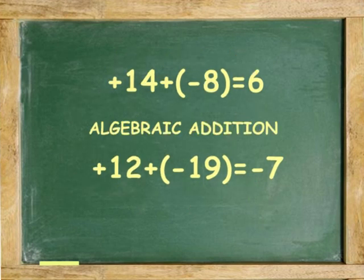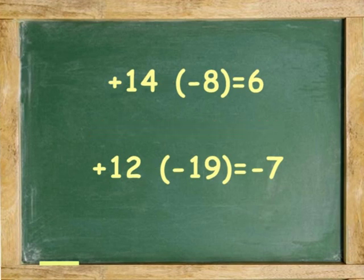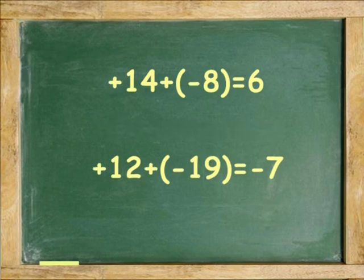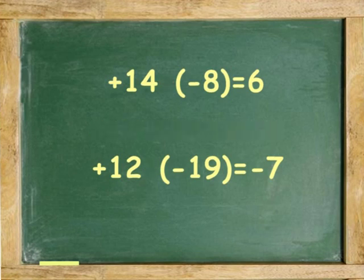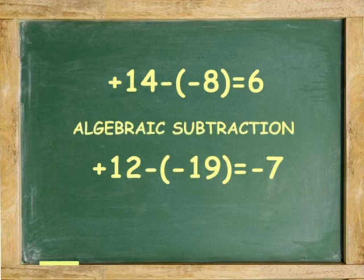What we just did is called algebraic addition. Notice that we are always adding, except that when you add a positive and a negative number, you are actually subtracting. Nevertheless, it is called algebraic addition. Now, if we have algebraic addition, we should also have algebraic subtraction. Algebraic subtraction involves taking away.